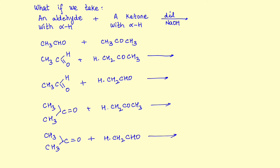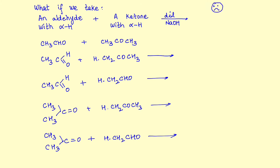Looking at all possible products — product numbers one, two, three, and four — you would get a mixture of aldols and ketols. Getting a mixture is a complete mess. This particular combination of an aldehyde with alpha hydrogen and a ketone with alpha hydrogen atom is not of much synthetic value; you cannot make much use of it.